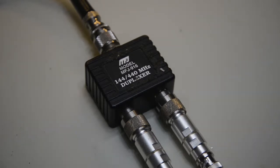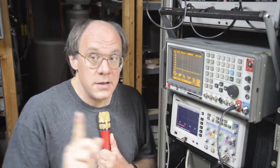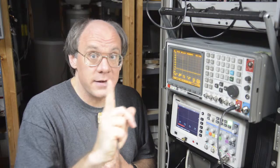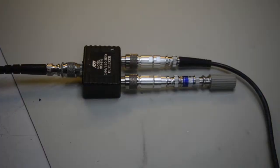First of all, what's a tracking generator? It's part of a spectrum analyzer that, as the spectrum analyzer's receiver sweeps in frequency, the tracking generator generates a signal at exactly that same frequency, and it is used so that the tracking generator and spectrum analyzer can make a measurement on a system.